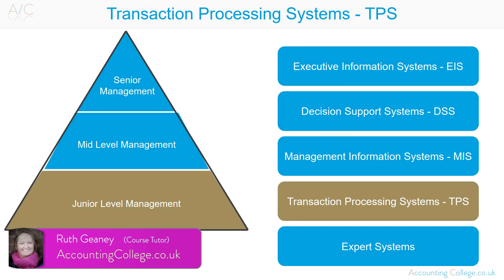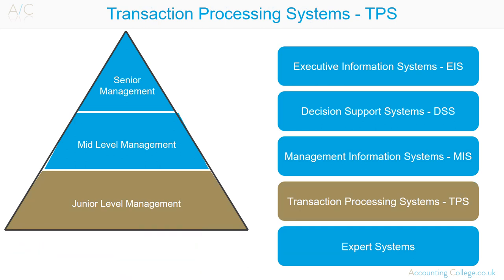A Transaction Processing System, or TPS, is a type of information system that collects, stores, modifies and retrieves the data transactions of an organisation. Transaction processing systems use very accurate, historical, routine information — for example, accounting record transactions.